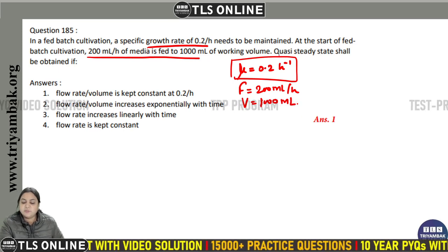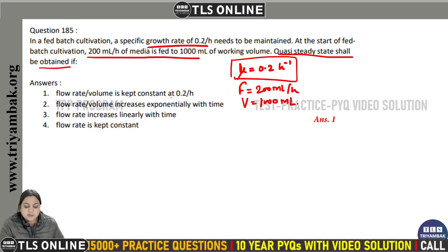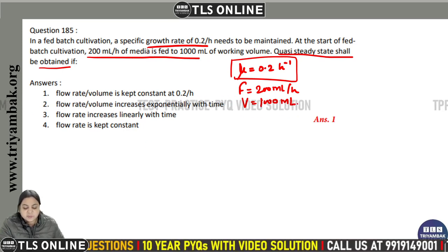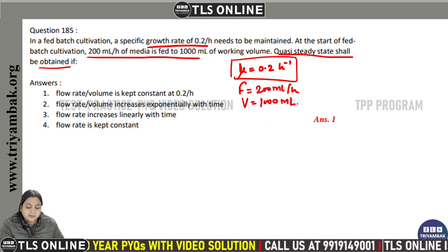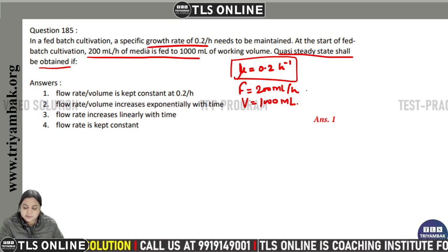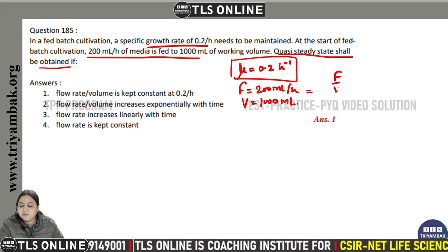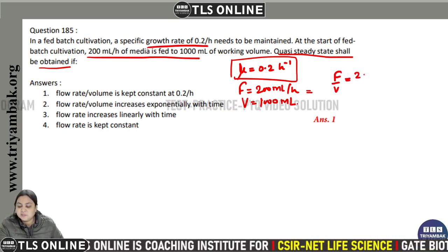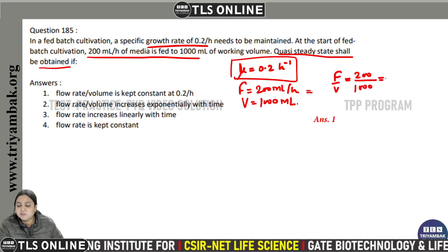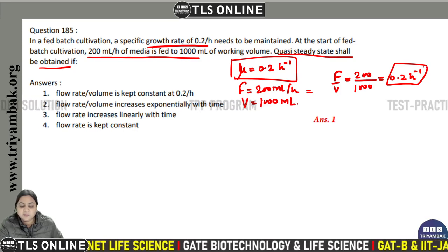For a steady state to be obtained, we check the given options: flow rate by volume is kept constant at 0.2 per hour; flow rate by volume increases exponentially with time; flow rate increases linearly with time; or only flow rate is kept constant. Calculating flow rate by volume: 200 divided by 1000 equals 0.2 per hour.